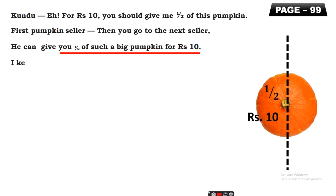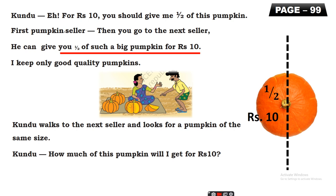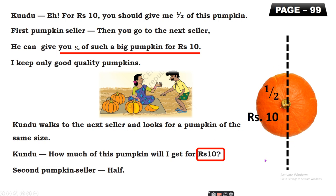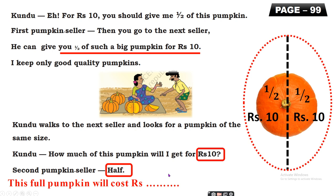The next pumpkin seller offers half a pumpkin for rupees 10. The seller says he keeps only good quality pumpkins. Kuddu walks to the second seller and asks how much of this pumpkin he will get for rupees 10. The second seller says half. So half a pumpkin costs rupees 10. The full pumpkin would cost 10 plus 10 — 2 times 10 — rupees 20.